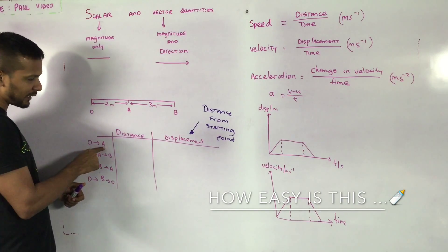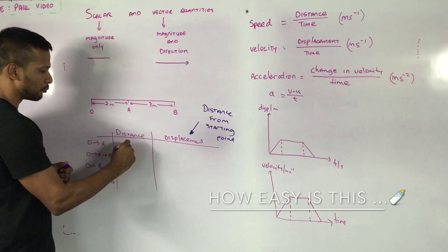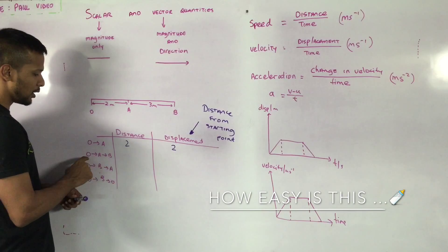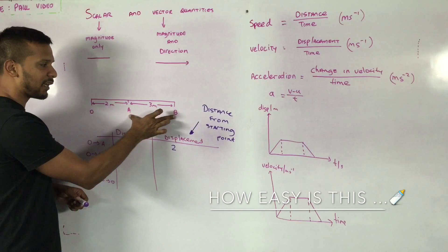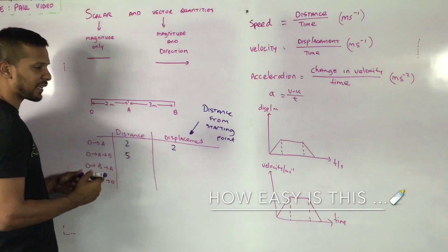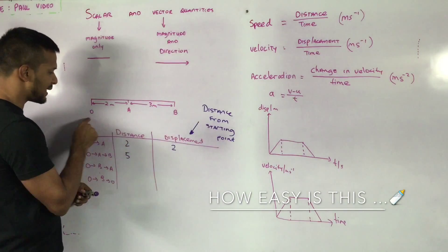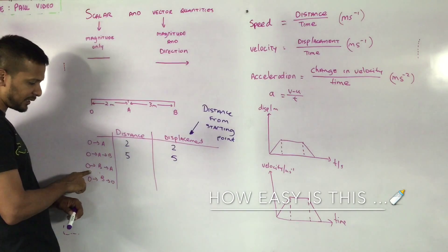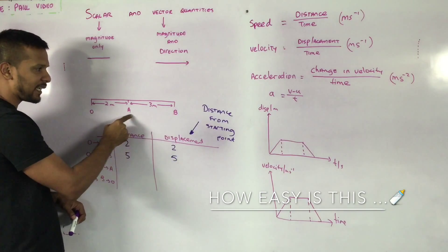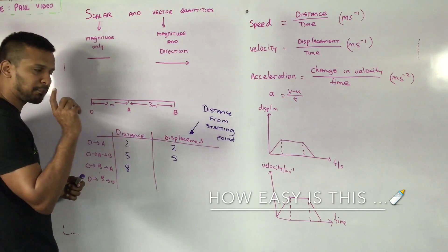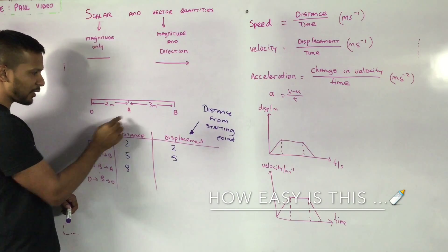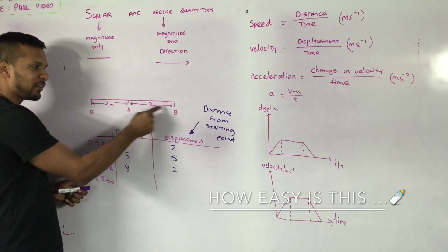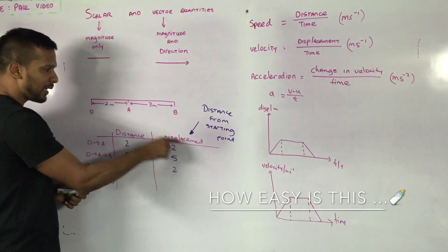Going from O to A: distance travelled is 2 metres; displacement is also 2 metres since I started at O and finished at A. Going O to A to B: travel from O to A is 2, A to B is 3, so total distance is 5. Displacement is also 5 since I'm at B and started at O. Going O to B to A: O to B is 5, then back to A — that's 8 total distance. But displacement is distance from your starting point. I am at A, I started at O, so my displacement is 2 metres. See the difference? Although I went on that journey, I finished at A and started at O, so my displacement is 2 metres.